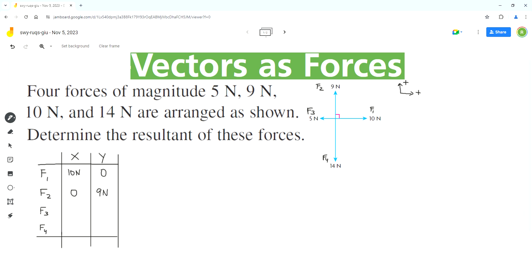For F3, the x component is negative five newtons and the y component is zero. For F4, the x component is zero and the y component is negative fourteen newtons.